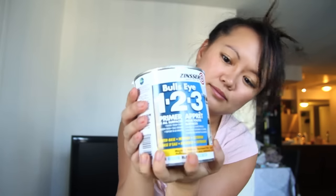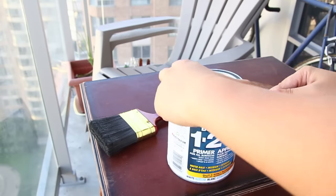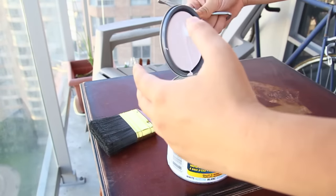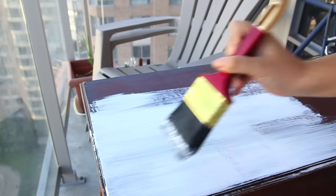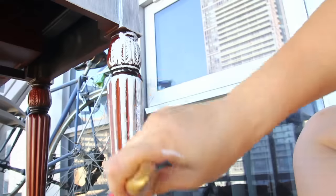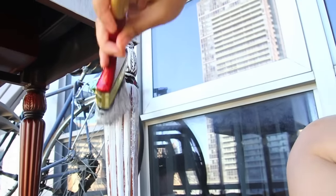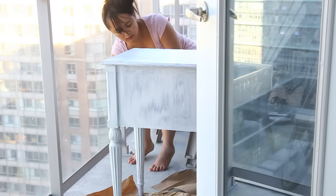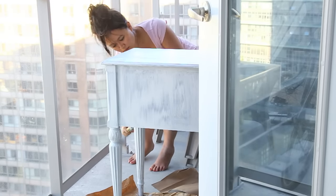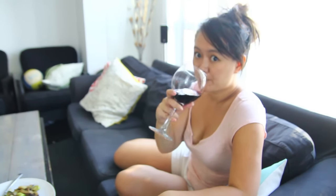Now you want to grab your primer. I'm using the Zinsser Bullseye 123 for this project. And then with big even strokes you just want to cover all of the surfaces with the primer. So I like to leave my primer to dry overnight. So just sit back and relax until tomorrow.